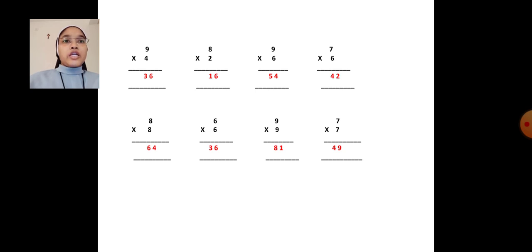9 into 6. 6 9's are 54. 7 into 6. 6 7's are 42.